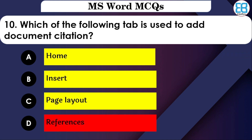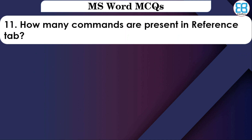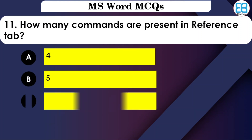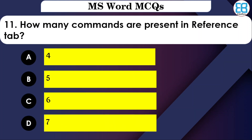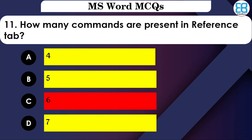How many commands are present in the References tab? The options are: Four, Five, Six, or Seven. The correct option is Six — there are six commands in the References tab.